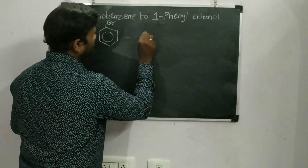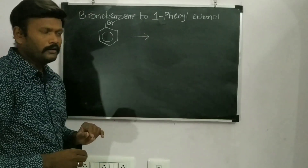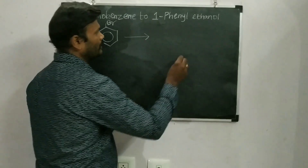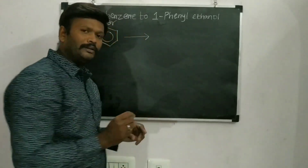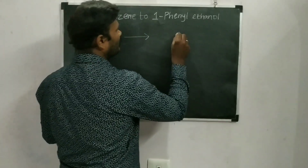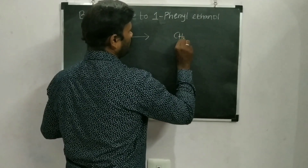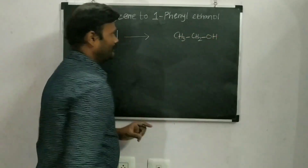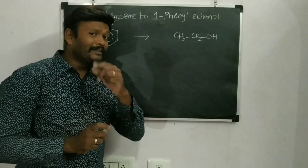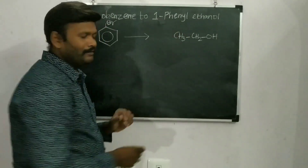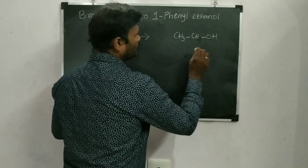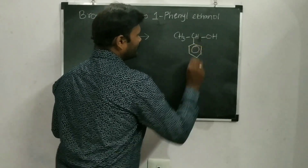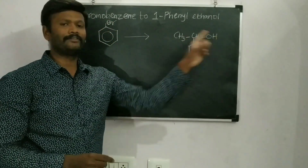And from that I would like to get 1-phenyl ethanol. If you don't know how to write the name of the compound, just look at this. Do you know the formula for ethanol? We know the formula for ethanol — that is CH3CH2OH. But what they are asking is 1-phenyl ethanol, where instead of one hydrogen, one phenyl group is there. This is 1-phenyl ethanol.